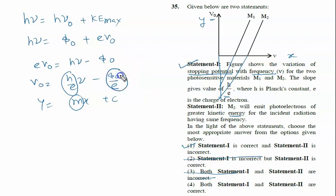This work function is showing phi naught upon E. So M1's work function is here and M2's work function is here. I hope it is visible to all of you. Work function of M2 is greater than work function of M1.